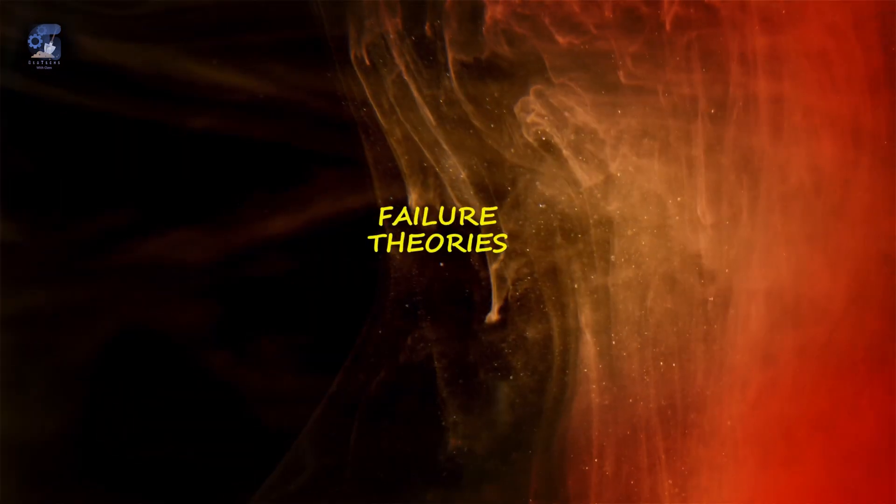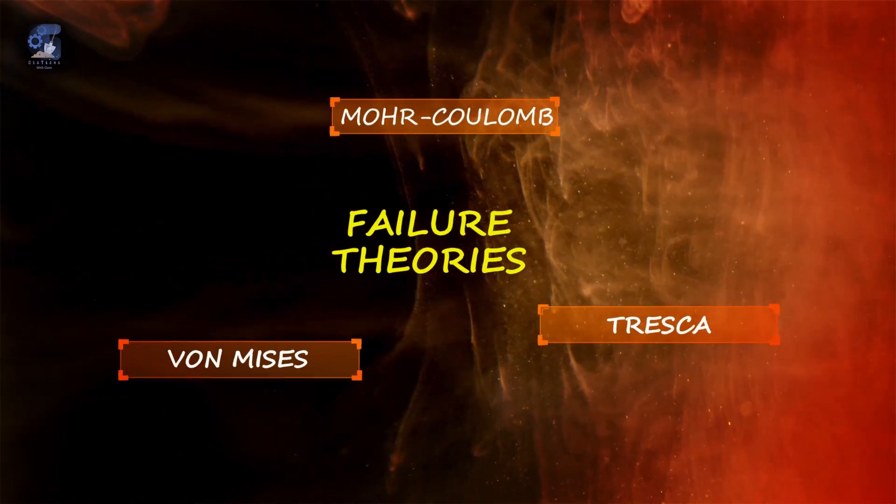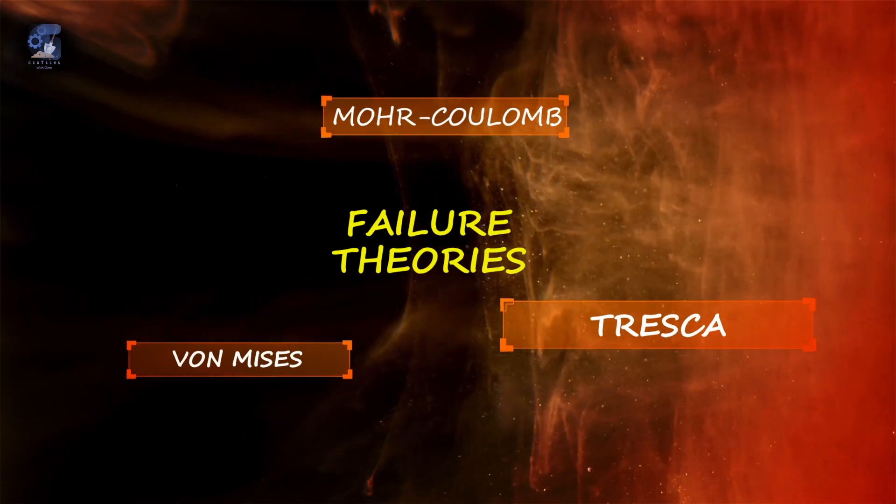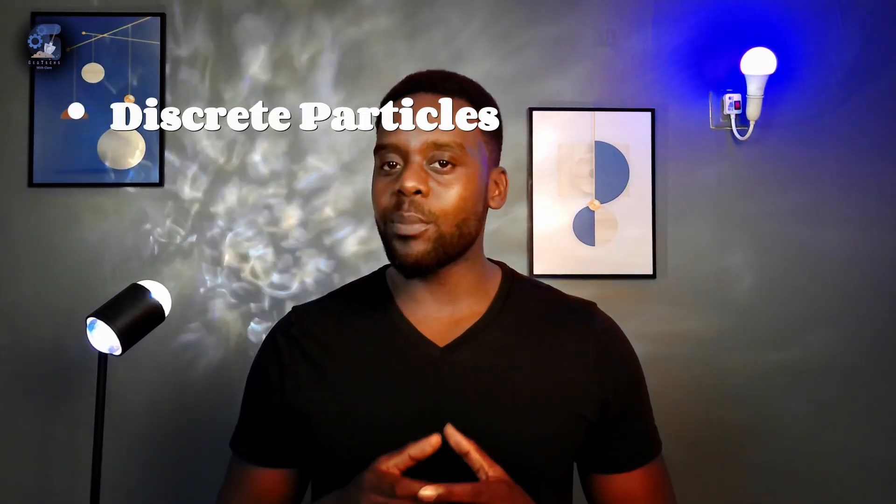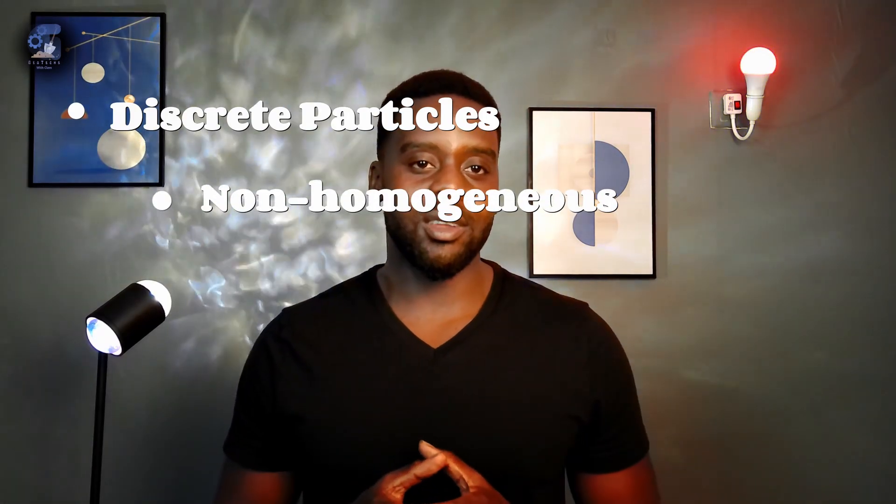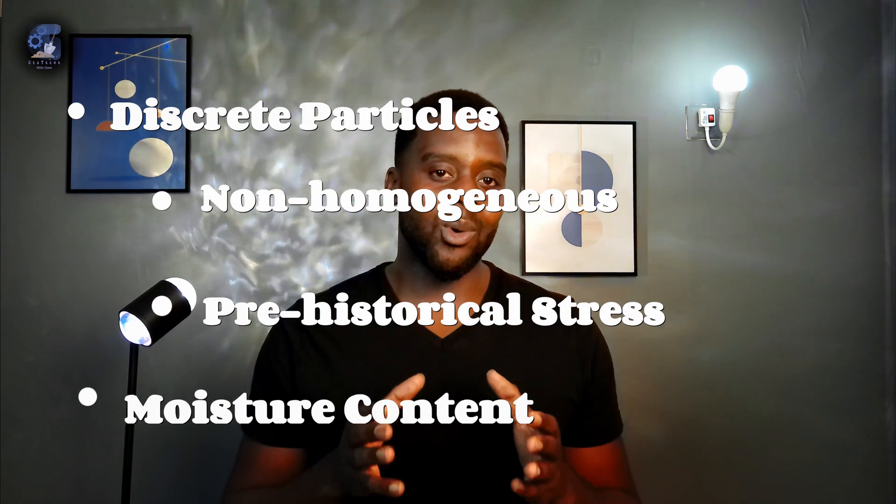There are models like the Mohr-Coulomb, Von Mises, and the Tresca to predict the failure for complex load conditions. But how do we predict failure for geo-materials like soil, which are made of discrete particles, non-homogeneous, affected by the pre-historical stresses, and the water content?